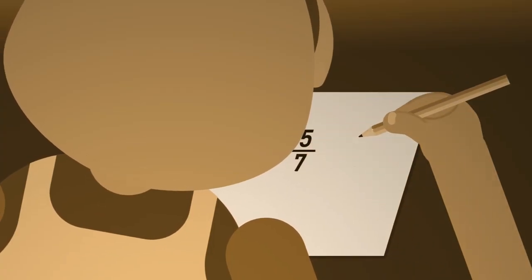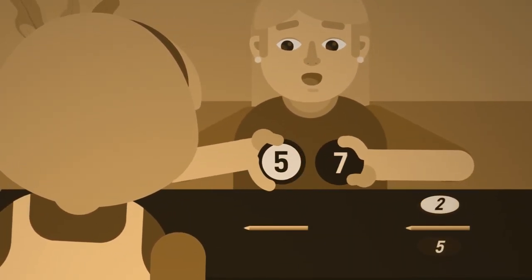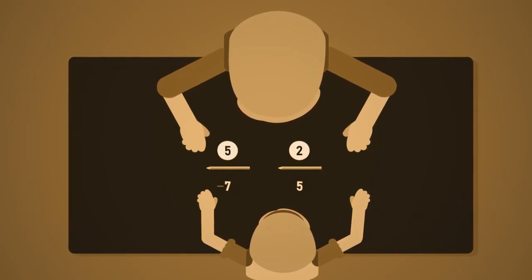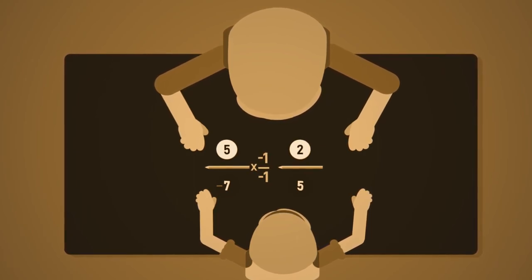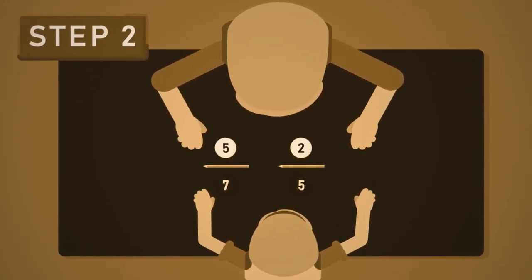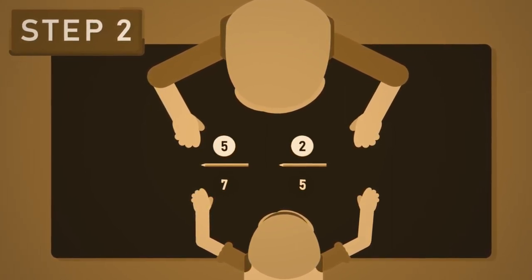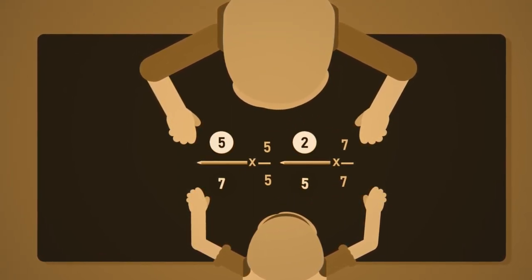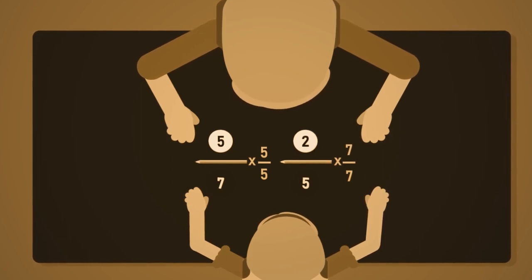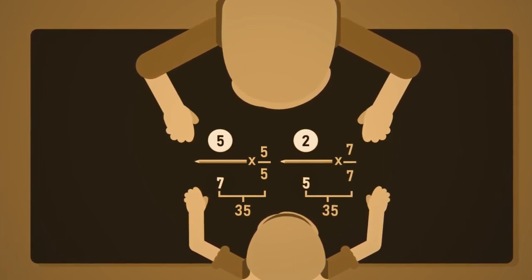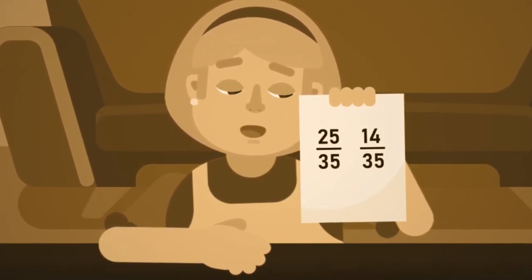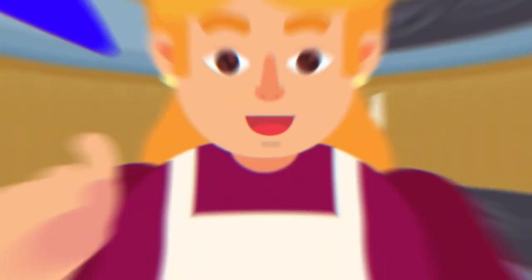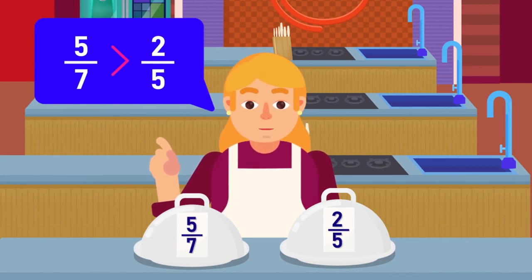First, rewrite the given rational numbers so that their denominators are positive. Since the denominator is already positive we don't need to make any changes, but when you get a negative denominator, change it to positive — it has the same value. Second, express the rational numbers with a common denominator by multiplying the unlike fractions so both end up with the same bottom number. Last but not least, compare both fractions — for example, 5 over 7 is greater than 2 over 5.